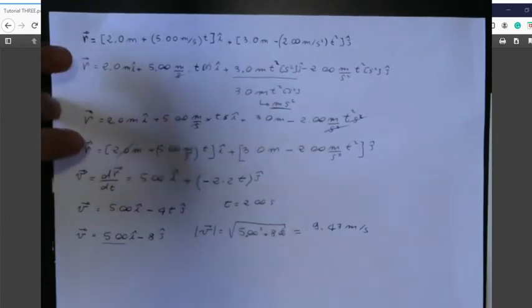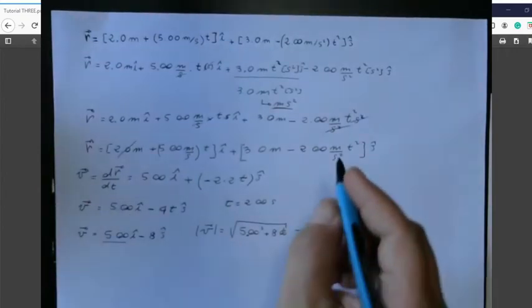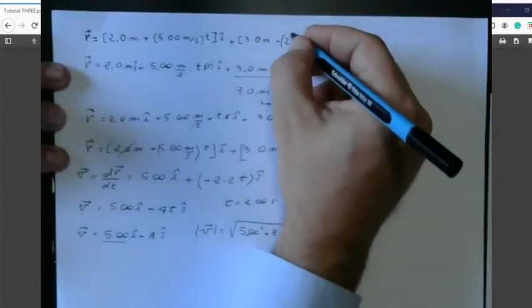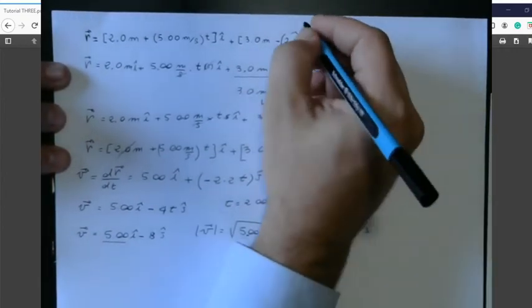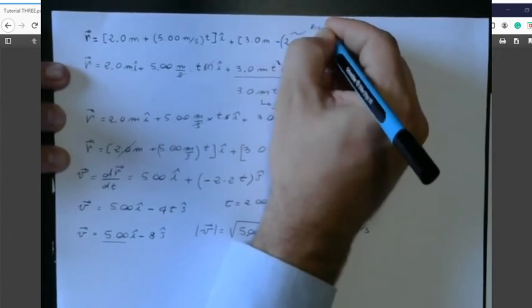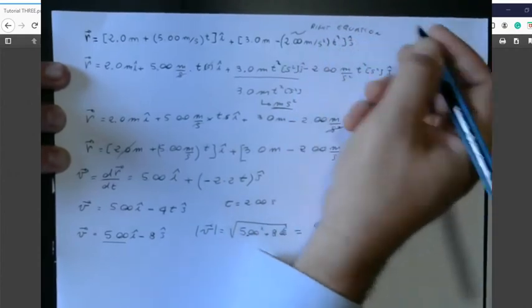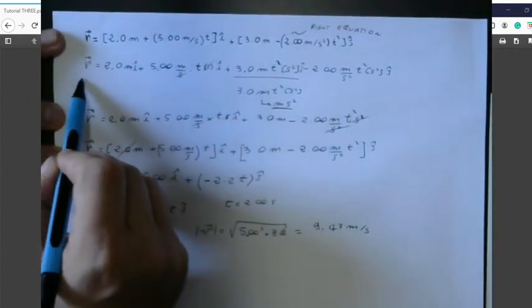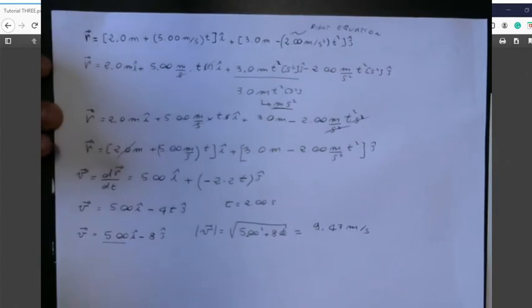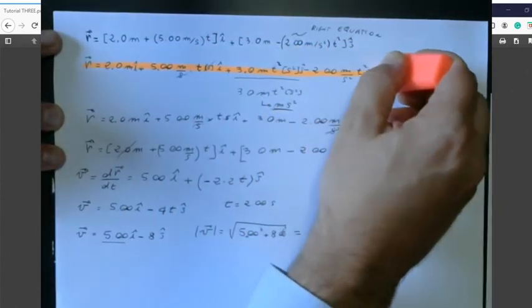Now you have the correct solution of the exercise. Remember that here there is the error. Sorry, this one is the right equation. Because if you do that, you cannot do it. Let's say that that is the wrong one. I underline that so you can find the notes on Moodle.